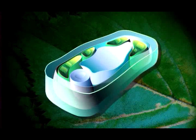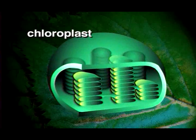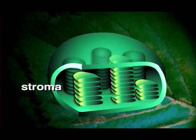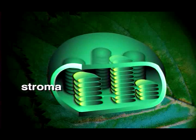Cells contain a number of green structures called chloroplasts. Looking more closely at a single chloroplast reveals that each of these organelles contains a protein-rich fluid called the stroma. The stroma contains enzymes necessary for the chemical reactions that take place during photosynthesis. It is here that glucose is manufactured.